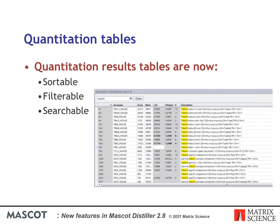There are some new features available on the protein and peptide quantitation tables. Tables are now sortable either by clicking on the column header or from the column context menu, and they are also searchable and filterable. Here I've enabled the table search panel and searched for tubulin on the protein quantitation results table. The table has been filtered so that only the matching protein rows are displayed, with the matching text highlighted in yellow.